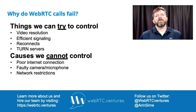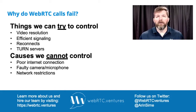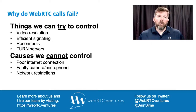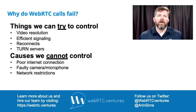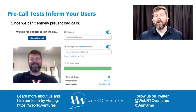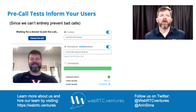There are also a lot of reasons that a video call over the internet might fail that we have no control over at all. We can't control if the users are on a poor internet connection, if they have a faulty camera or microphone, or what network restrictions they may have. So if those are leading causes of why WebRTC calls fail, what can we do about that? Well, one thing we can do is inform our users about it so that they're aware of the problems they're facing and how that may impact their call, so that maybe they can make different choices. And the way to do that is with a pre-call test.